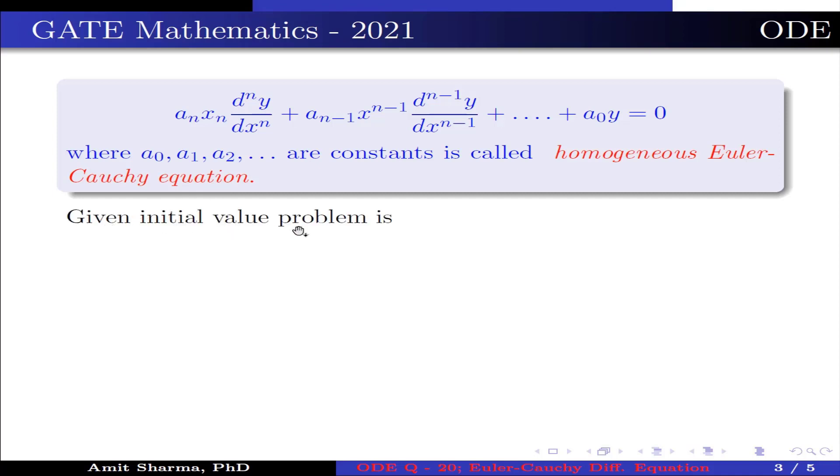Given initial value problem is x² d²y/dx² - 4x dy/dx + 6y = 0, where x > 0, which is a homogeneous Euler-Cauchy equation.